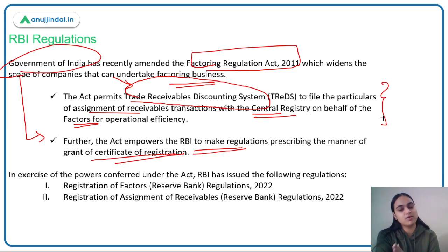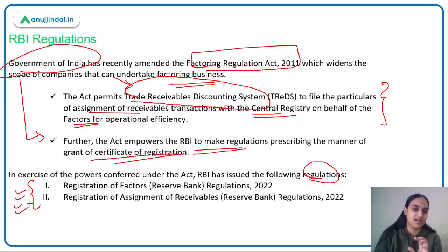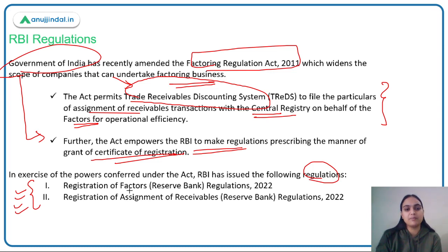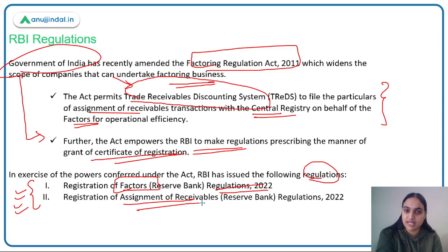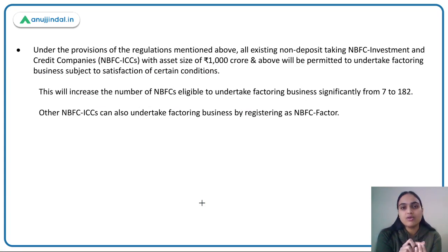In exercise of the powers provided under this Act, RBI has come up with two sets of regulations — one related to registration of factors, and the other related to registration of assignment of receivables. RBI has also released three notifications and press releases. In the first, they mentioned releasing two regulations. Both regulations have been notified.